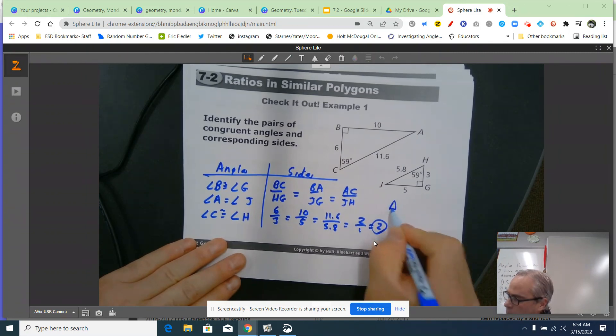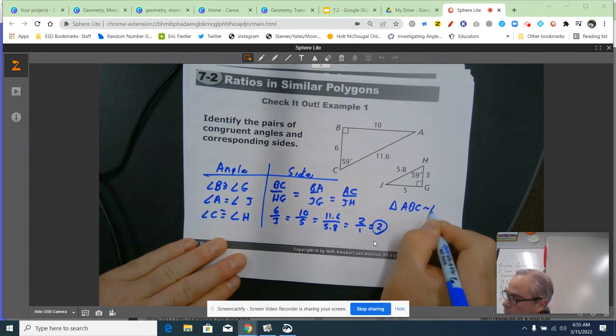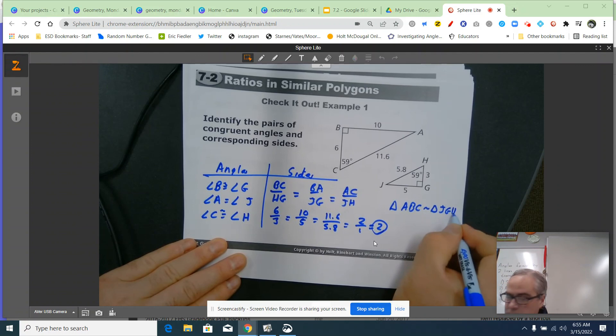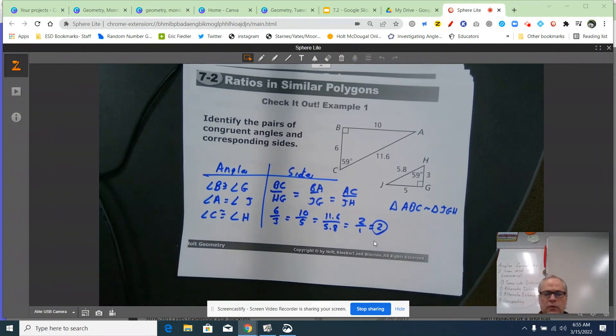If I had to make the similarity statement, triangle ABC is similar to triangle, and then we're going to go JGH. Okay, good. Thanks for watching this first video.